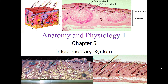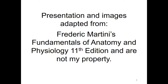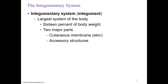Anatomy and Physiology 1, Chapter 5, Integumentary System. The Integumentary System is our first full system that we'll be talking about after tissues. The Integumentary System, or the Integument, is another way of saying the skin. It is the largest system in your body, makes up 16% of your weight. We can separate it into two main parts: the skin itself, which is the cutaneous membrane, and the accessory structures, which would be things like hair, nails, and glands. We'll talk about all of those by the time we end Chapter 5.